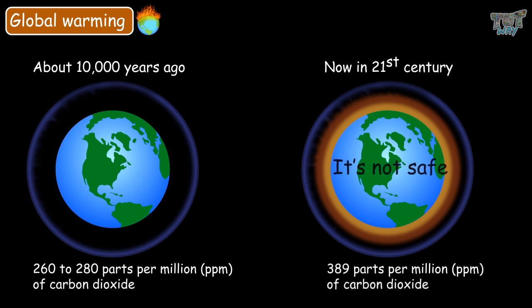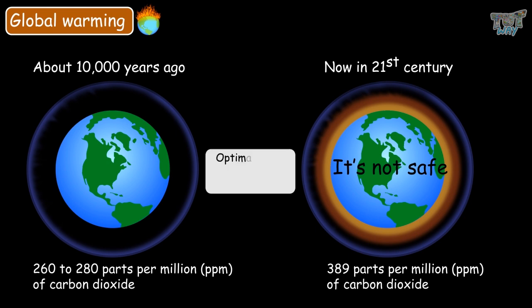According to studies, this is not safe. The amount of carbon dioxide in the atmosphere should be 350 parts per million. Higher levels are not safe for the life on Earth. And global warming is all due to this increased percentage of carbon dioxide in the atmosphere.